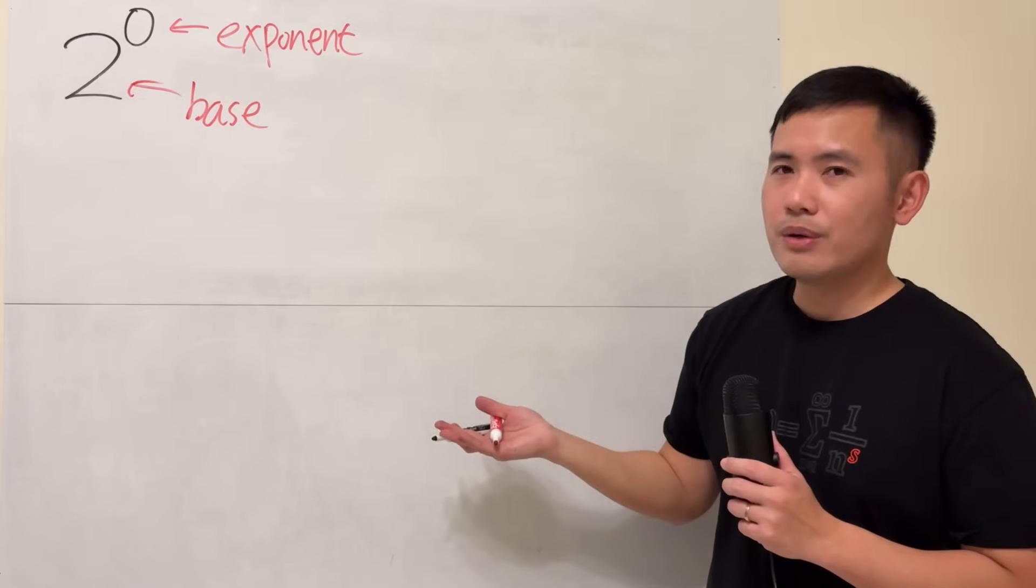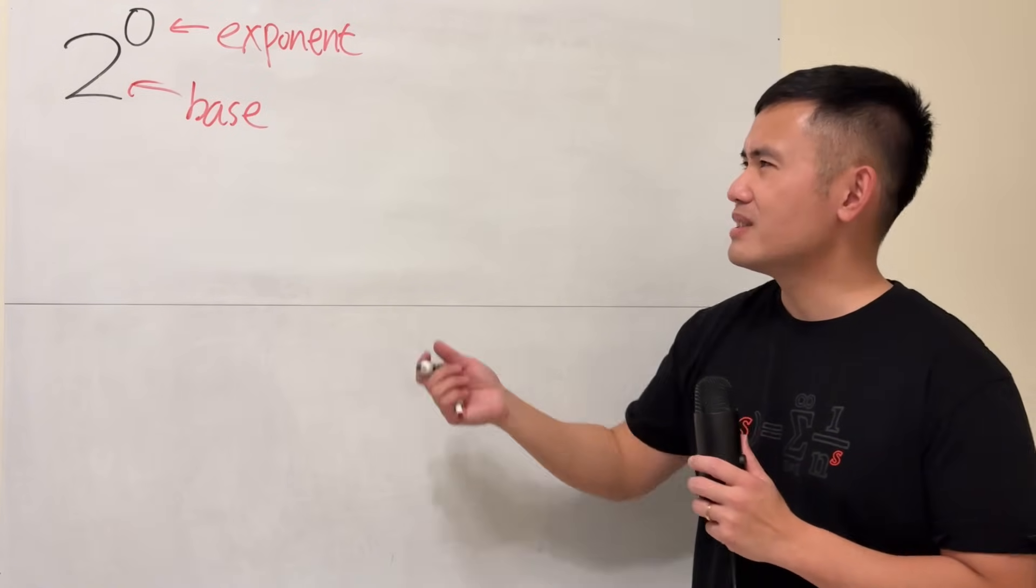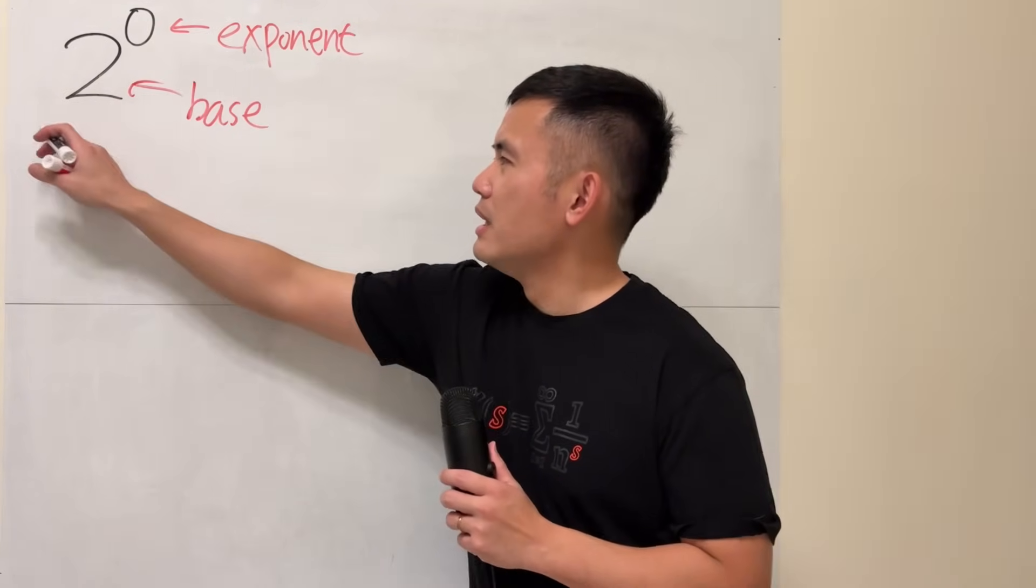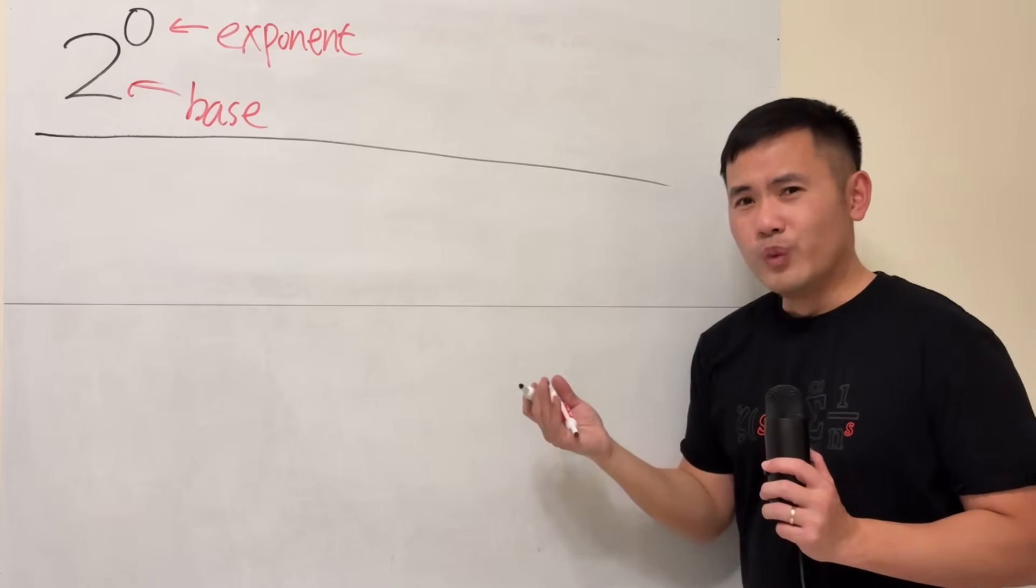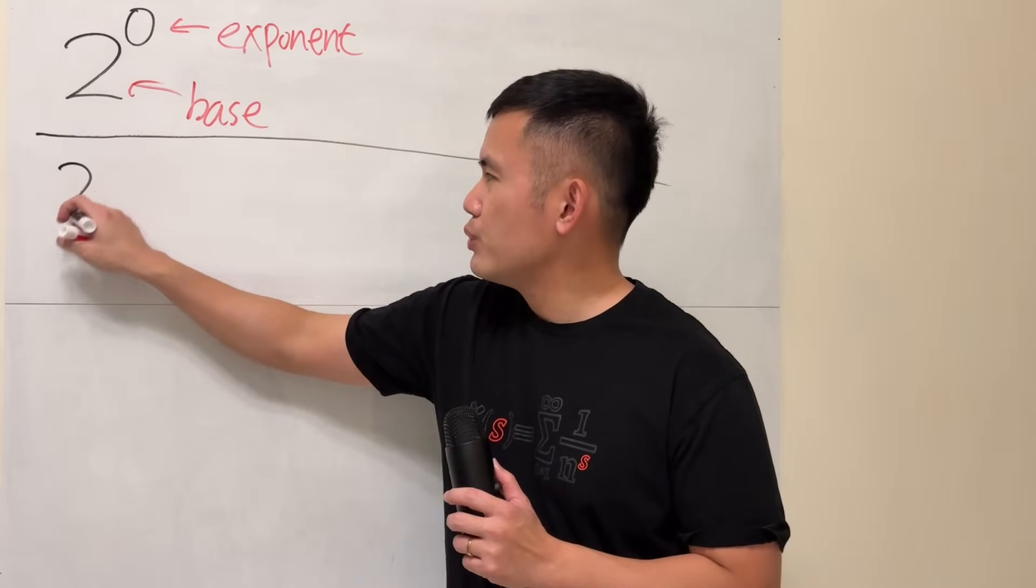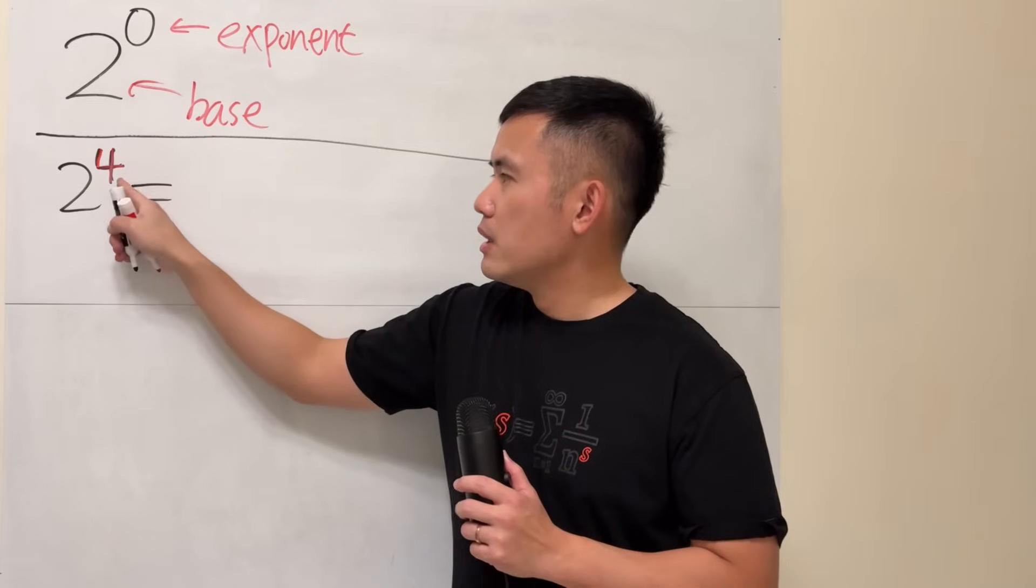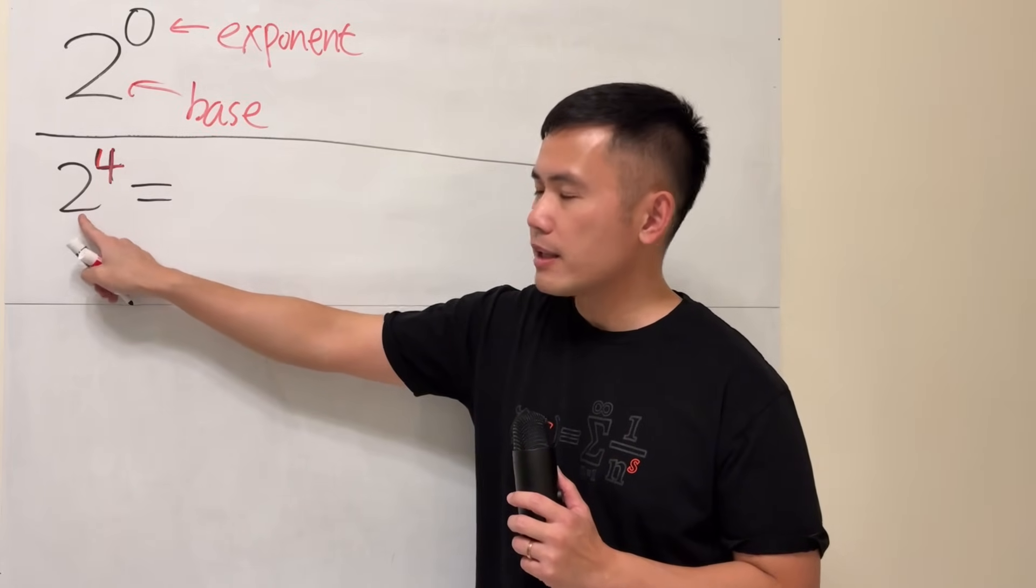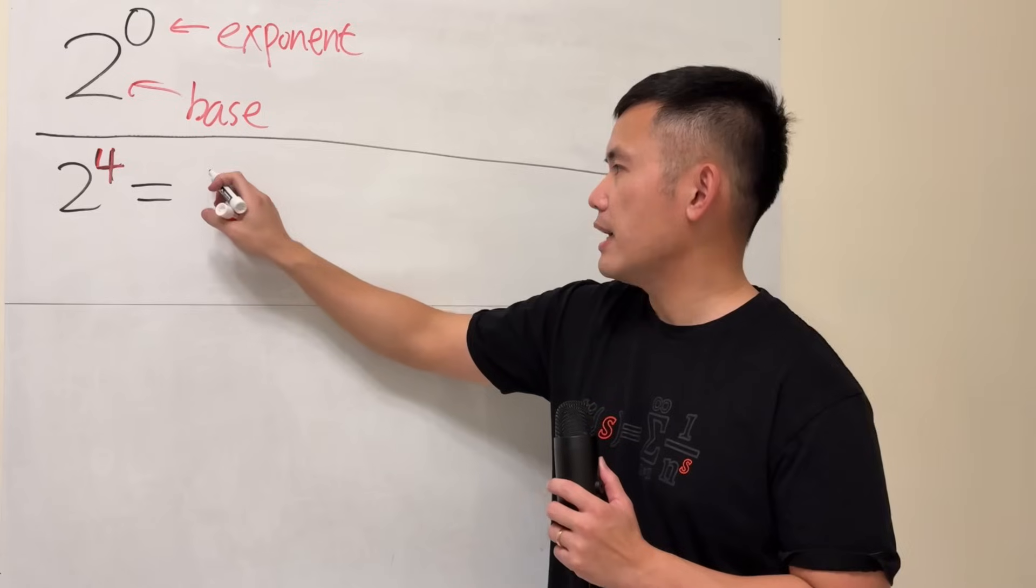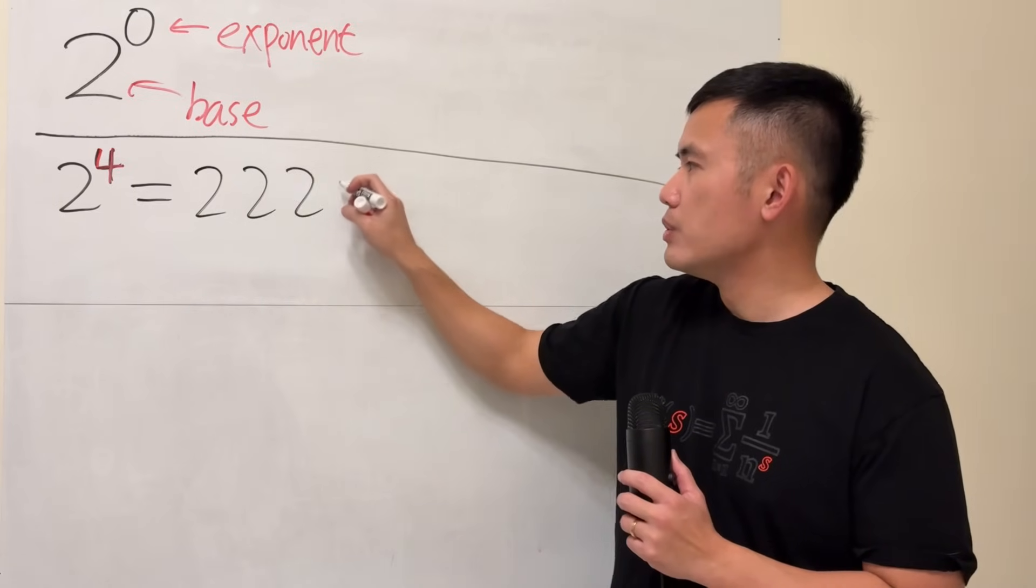So what does this mean though? It's kind of strange, because what does the 0 exponent mean? Usually when we have exponents, let's say we have 2 to the fourth power, this 4 tells us how many times that we have to write down the base. So 4 times in this case, so 2, 2, 2, 2.